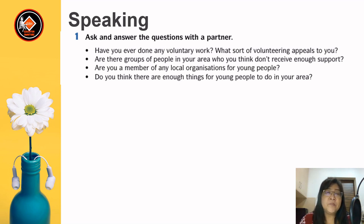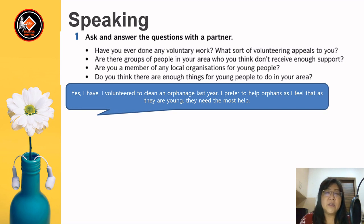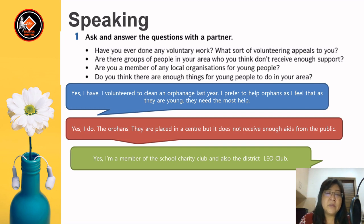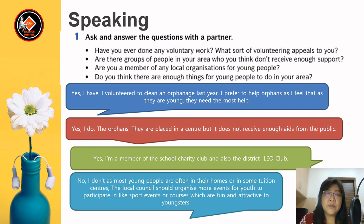Let's look at the first question: Have you ever done any voluntary work? What sort of volunteering appeals to you? You can say: Yes, I have. I volunteered to clean an orphanage last year. I prefer to help orphans as I feel that they are young and need the most help. Are there groups of people in your area who don't receive enough support? Yes — the orphans. They are placed in a centre but it does not receive enough aid from the public. Are you a member of any local organisation for young people? Yes, I am a member of the school charity club and also the district Leo Club. Do you think there are enough things for young people to do in your area? No, I don't. Most young people are often at home or in tuition centres. The local council should organise more events for youth to participate in, like sports events, which are fun and attractive to youngsters.